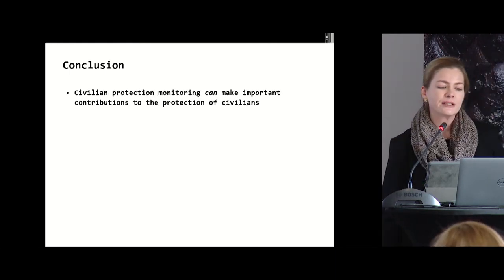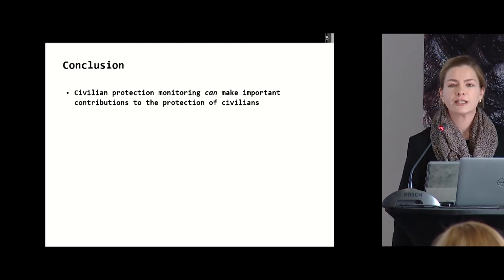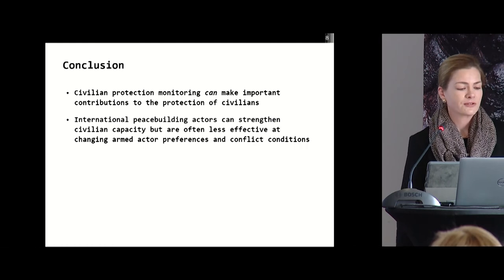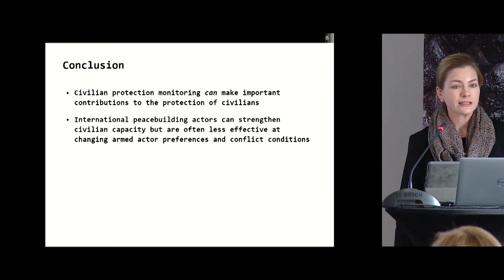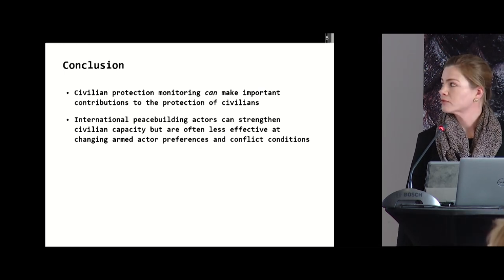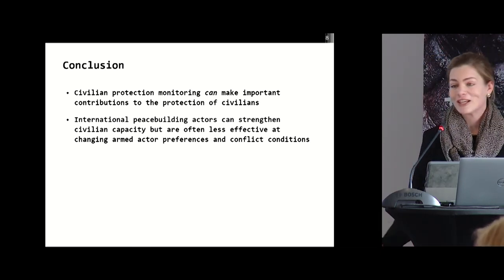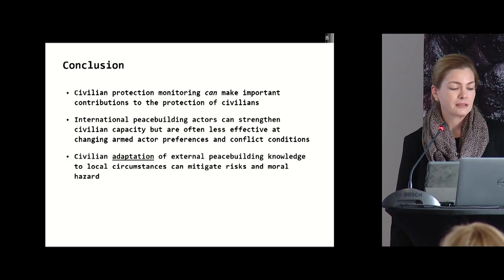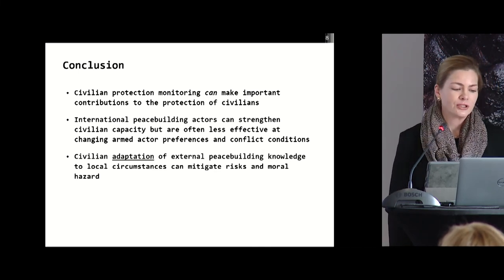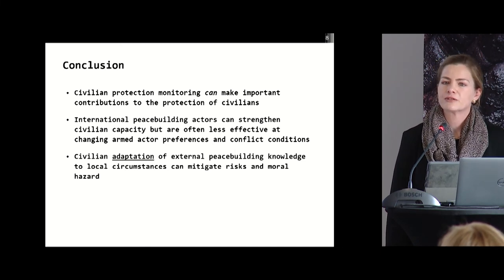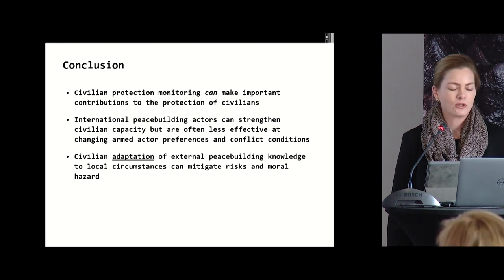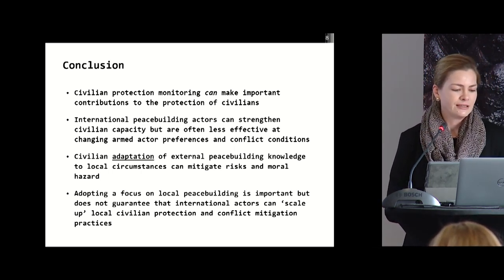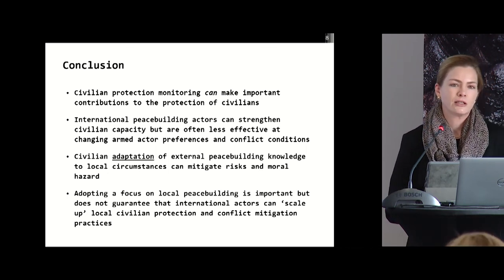In conclusion: first, civilian protection monitoring can make an important contribution to protecting civilians, but only under specific conflict conditions. Second, international peacebuilding actors can strengthen civilian capacity — many NGOs are very good at this, with successful programs in countries like Colombia — but they are often much less effective in changing armed actor rationale and overall conflict conditions. Third, civilian adaptation of external peacebuilding knowledge to local circumstances was a key factor that mitigated risks for civilian involvement and the potential risks of moral hazard. Finally, adopting a focus on local peacebuilding is important, but it does not guarantee that international actors can scale up local civilian protection and conflict mitigation practices. Thank you.